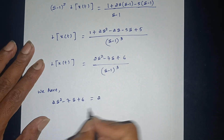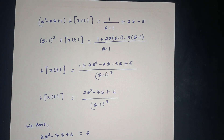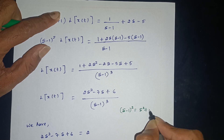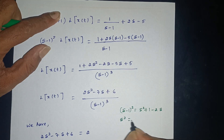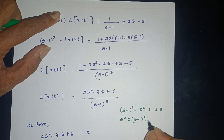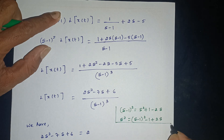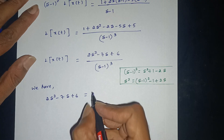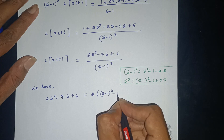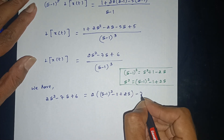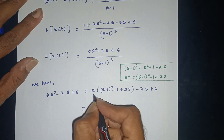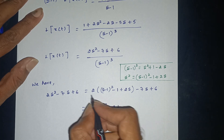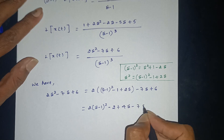We expand 2s² minus 7s plus 6 in terms of (s-1). Using the identity 2(s-1)² = 2s² minus 4s plus 2, and s = (s-1) plus 1, we rewrite: 2 into (s-1)² minus 3 into (s-1) plus 4s minus 7s plus 6, simplifying step by step.